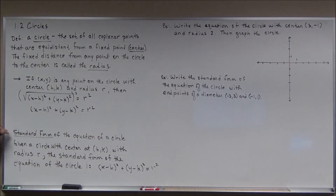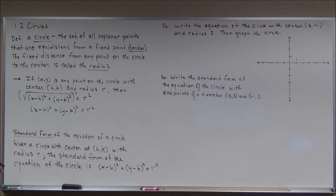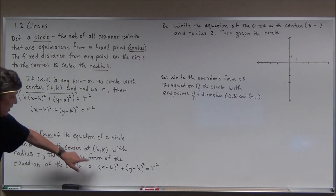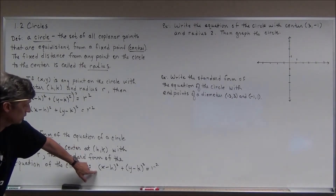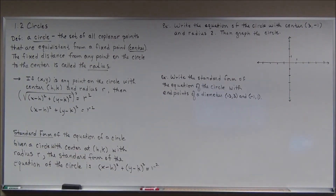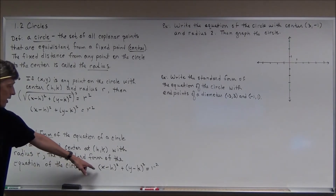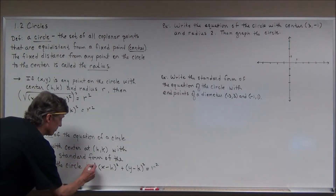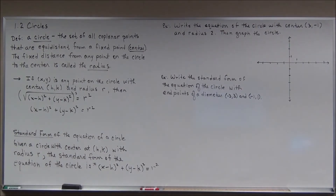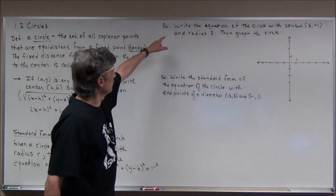That leads us to the standard form of the equation of a circle. Given a circle with center (h, k) and radius r, the standard form is (x minus h) squared plus (y minus k) squared equals r squared. The circle is the first conic section we will study — we'll get to the others later. This is an equation you should have memorized; if you haven't, I would suggest you do that.